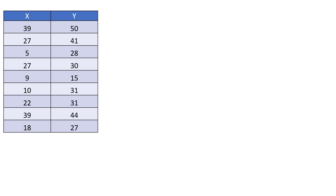The type of data we'll be dealing with in this section relates to two quantitative variables collected for the same individual. For example, individual one has a 39 for the x variable and a 50 for the y variable. Individual two has a 27 for their x variable and a 41 for their y variable, and so on for all the different observations.